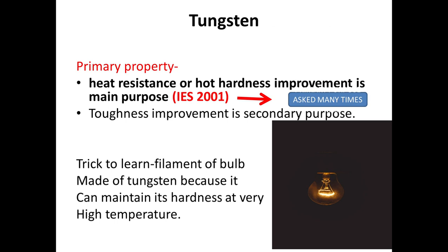Tungsten also provides toughness. To help remember this, we know that the electric bulb filament is made of tungsten so that it can withstand high temperature and cannot evaporate easily. That is why tungsten has high hot hardness or heat resistance.